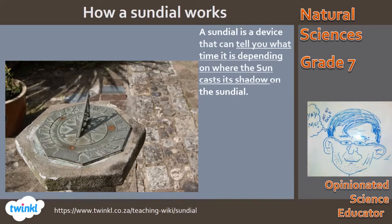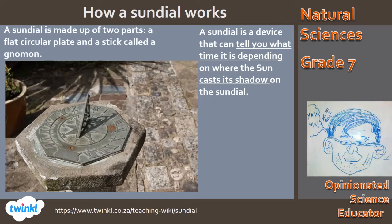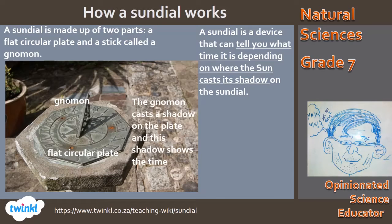So let's look at how a sundial works. It's a device that you can tell the time from depending on where the sun casts its shadow on the sundial. The sundial consists of two parts: a flat circular plate with markings on it, and a stick called a gnomon — the G is silent. There's the flat circular plate, and there's the gnomon. As the sun casts a shadow on the plate, this shadow helps you to tell the time.